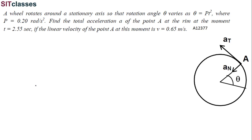A wheel rotates around a stationary axis so that the rotation angle theta varies as theta equals p·t², where p = 0.20 radians per second square. Find the total acceleration A of the point A at the rim at the moment t = 2.55 seconds, if the linear velocity of point A at this moment is v = 0.65 meters per second.